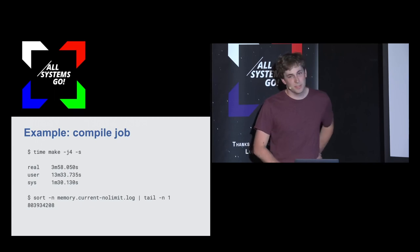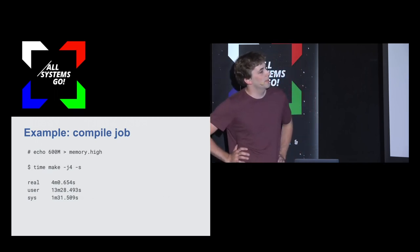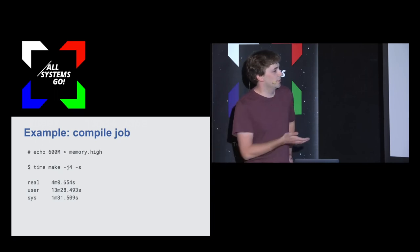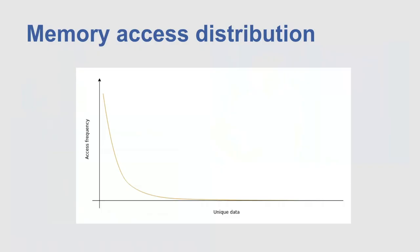I had a suspicion that 800 megabytes is not exactly the amount I need. So I let it run again with a limit of 600 megabytes, and it takes the exact same amount of time. To understand why, you have to look at the memory access distribution of a workload. On the graph, the x-axis shows the unique data a workload accesses during its lifetime, and the y-axis shows access frequency. Not everything that is allocated is used at the same frequency. To the left where access frequency is high, for the compile job that's things like gcc and glibc — all the stuff that runs on every single source file.